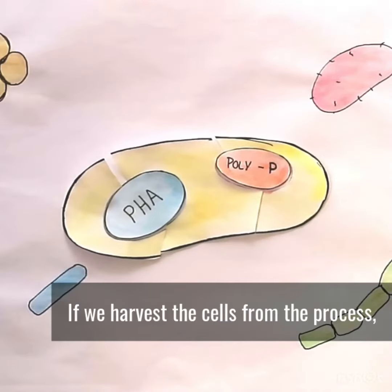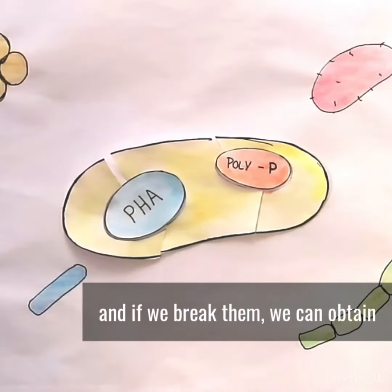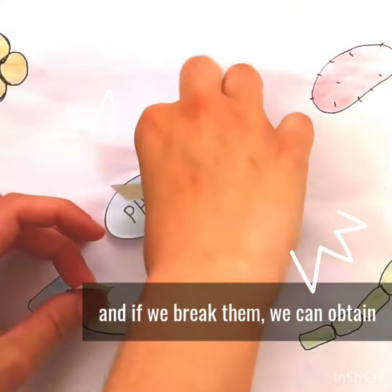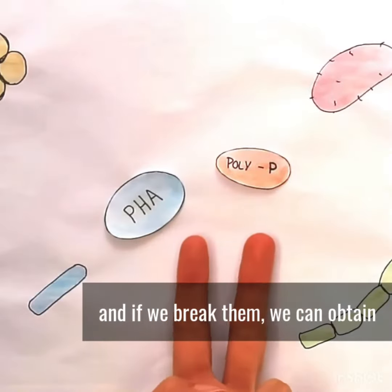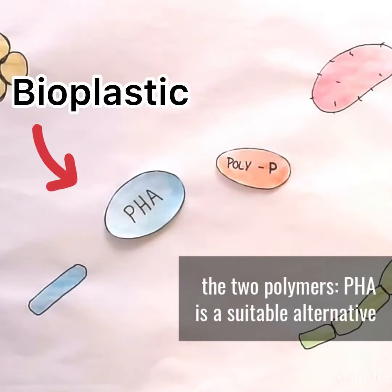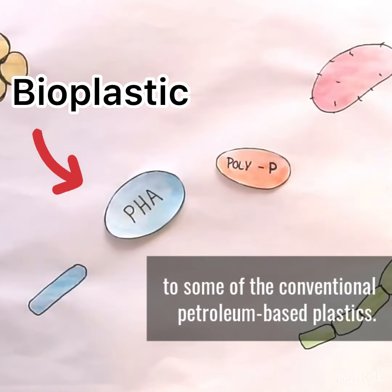If we harvest the cells from the process and break them, we can obtain these polymers. PHA is a suitable alternative to some conventional petroleum-based plastics, and polyphosphate can be used as a fertilizer to grow crops.